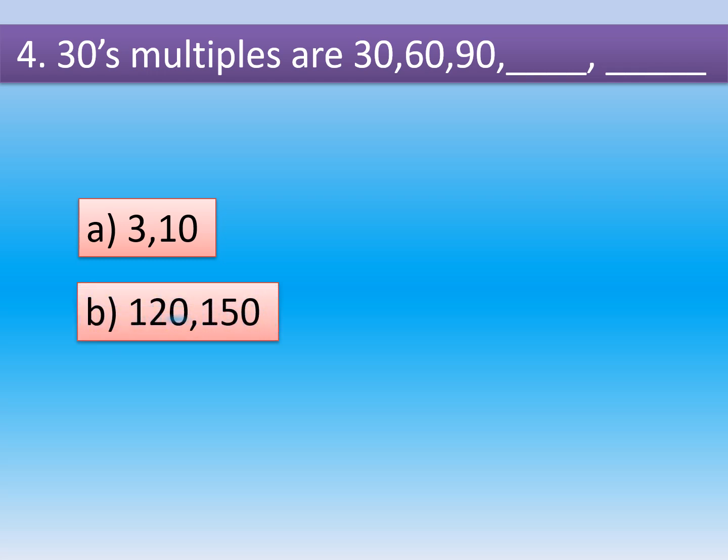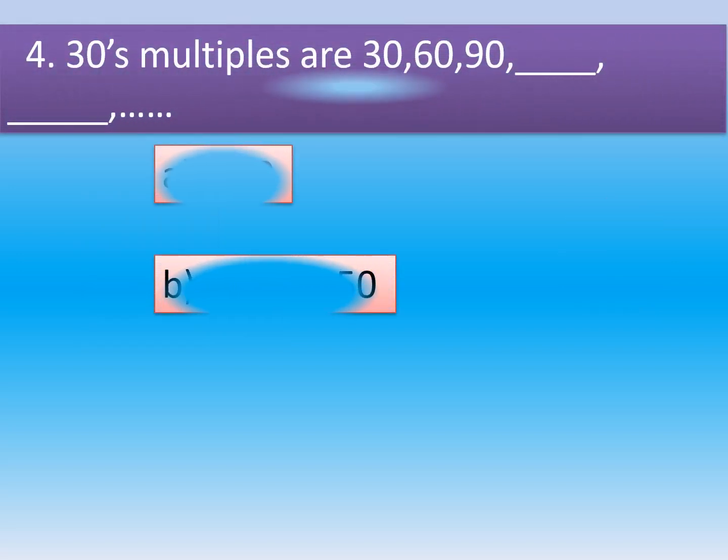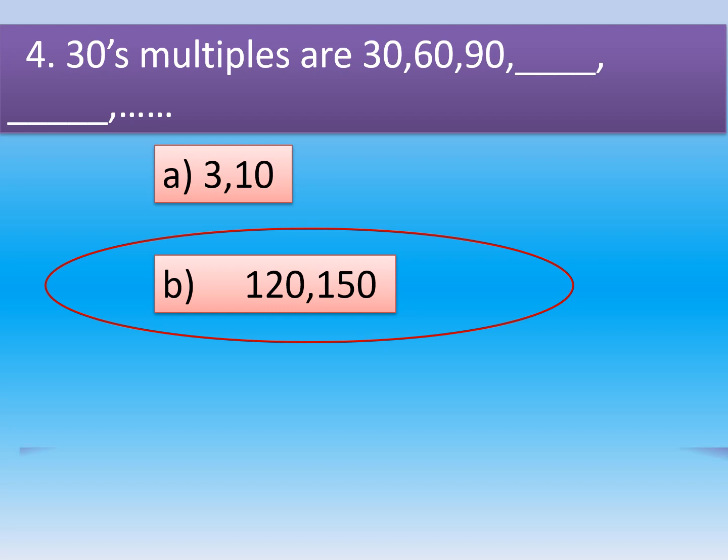90, dash, and dash. Option A, 3, 10. Option B, 120, 150.